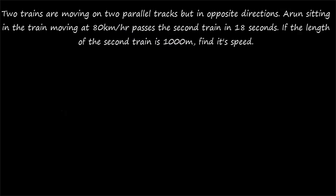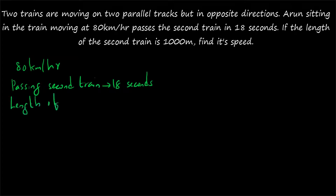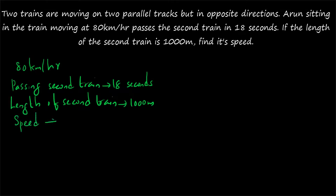Question number 2: Two trains are moving on two parallel tracks but in opposite directions. Arun, sitting in the train moving at 80 km/h, passes the second train in 18 seconds. If the length of the second train is 1000 metres, find its speed. Speed of one train is 80 km/h, the time to pass is 18 seconds, and the length of the second train is 1000 metres. We have to find the speed of the second train.